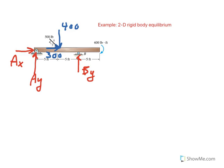Notice that we have three unknowns here: Ax, Ay, and By. In a typical statically determinant two-dimensional rigid body problem, we only have three equations that we can use.